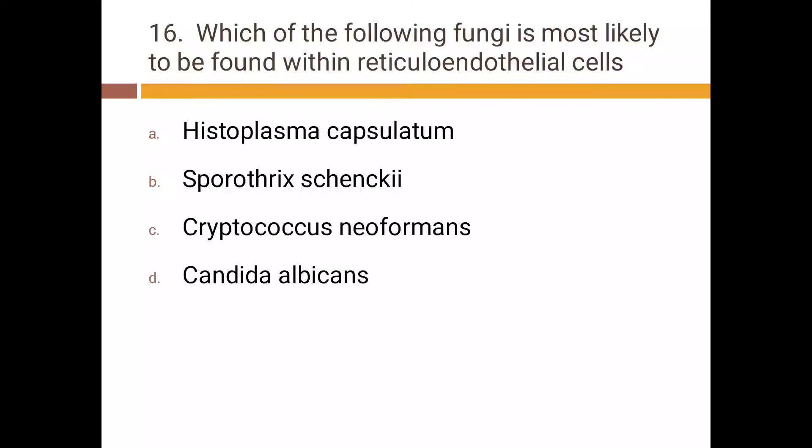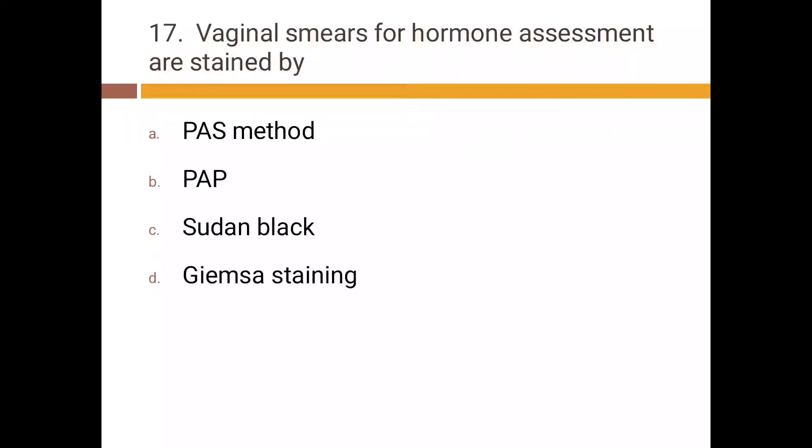Vaginal smear for hormone assessment are stained by: a) PAS method, b) Pap method, c) Sudan black, d) Giemsa staining. Correct answer is b) Pap method.